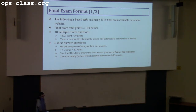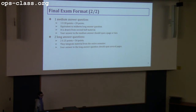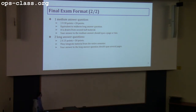The short answer questions are mostly drawn from second-half material, but not entirely — some could cover midterm topics. Then there's one medium answer question worth 20 points, drawn from second-half material, to be answered in a page or two. Then two long answer questions, each worth 25 points (50 points total), both required — not like the midterm where you choose one. They integrate material from the entire semester and your answer should span several pages.